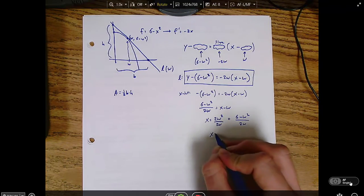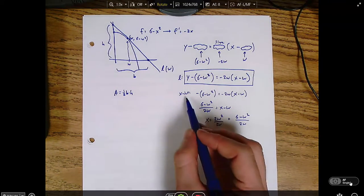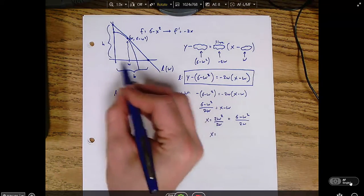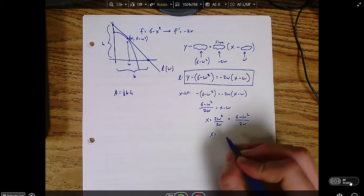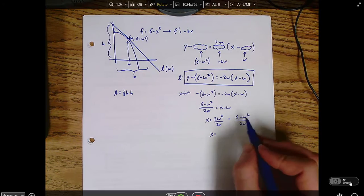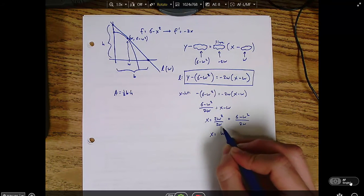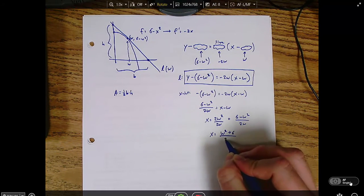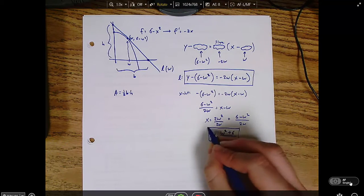So do we agree this is the same thing as w? Think about canceling. Yep, that seems good. So now we'll combine them. And we get that the x-intercept, which is the same thing as this base value, is, let's see, 2w squared minus w squared. So that's 1w squared plus 6 over 2w.